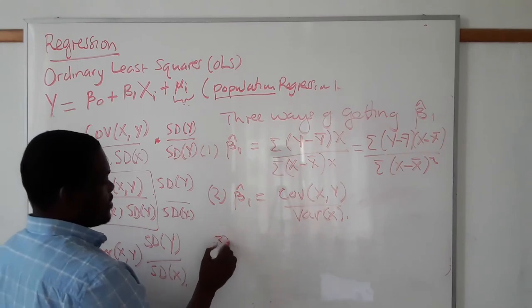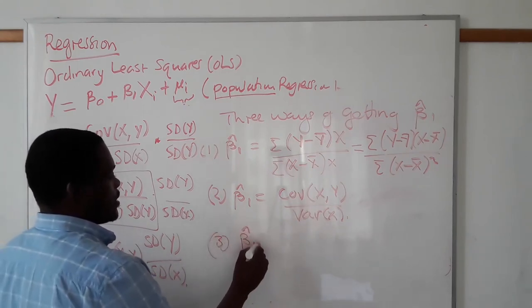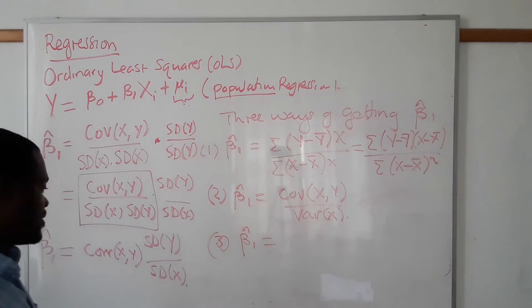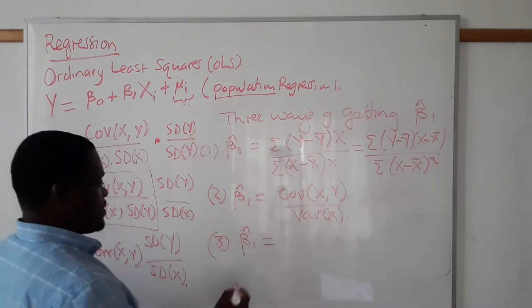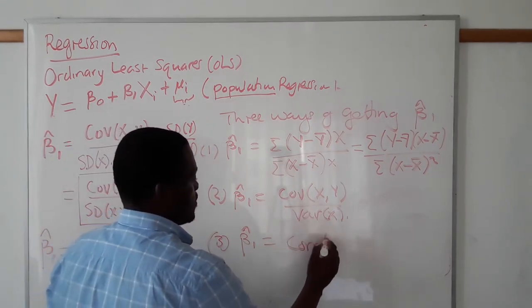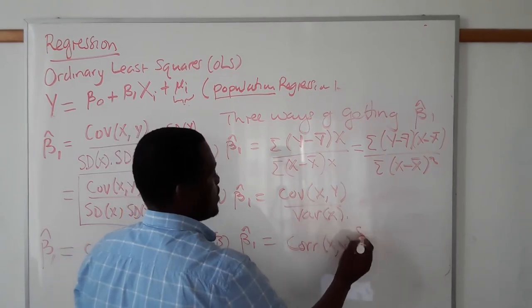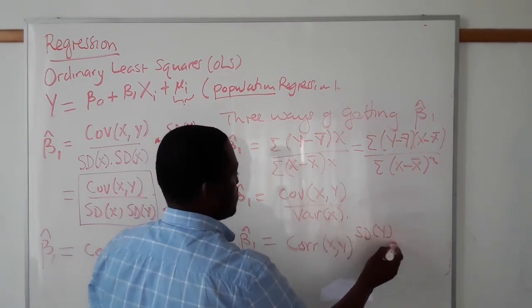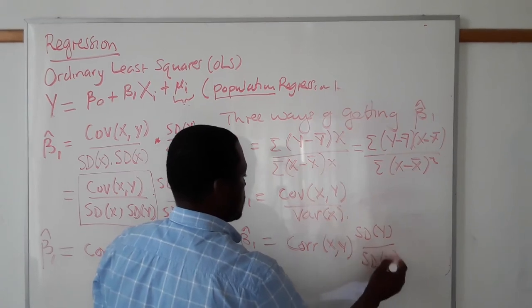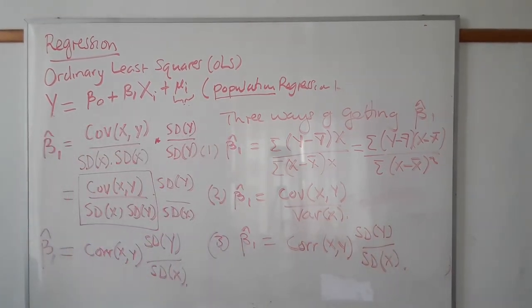And the method that can also give us probably the same answer is this one, which is your correlation of X, Y times standard deviation of Y over standard deviation of X. Now, these are three alternative ways of finding the estimate of the slope parameter.